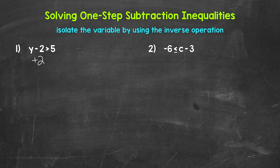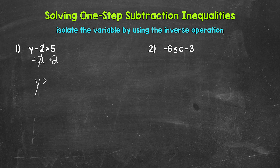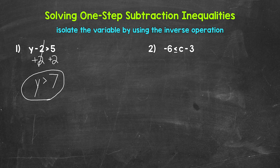The inverse operation of subtraction is addition. So add two to the left side of the inequality. Whatever we do to one side of an inequality, we must do to the other in order to keep it balanced. So add two to the right side as well. These twos cancel each other out. Y is now isolated. We have y is greater than, and then on the right side, five plus two gives us seven. So y is greater than seven. Any value greater than seven is a solution of this inequality.